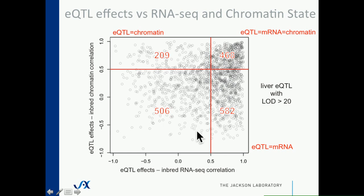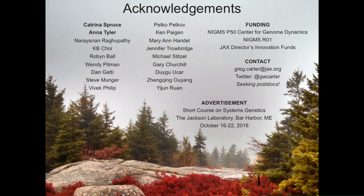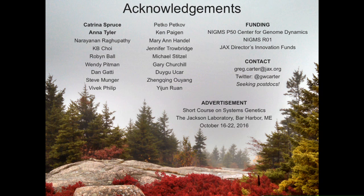In conclusion: genetic variation unsurprisingly gives us epigenetic variation; epigenetic-RNA concordance tends to be higher when looking at a response to treatment than between genetic backgrounds; transcriptional and epigenetic chromatin state responses to treatment vary across strains; and we can interpret some EQTLs through a simple epigenetic model at the locus. I acknowledge Katrina Spruce in the Pagan Lab who did a lot of this work, as well as Anna Tyler, a postdoc in my group. Thank you very much.